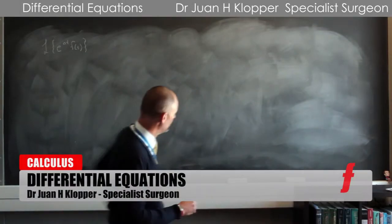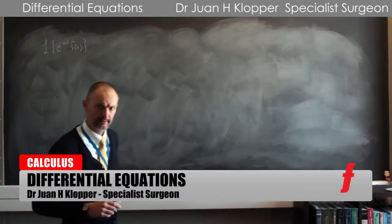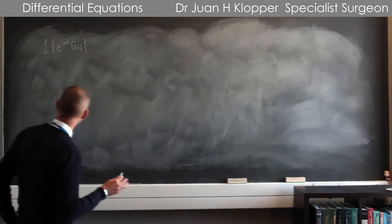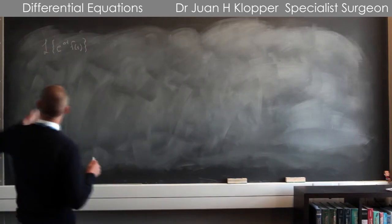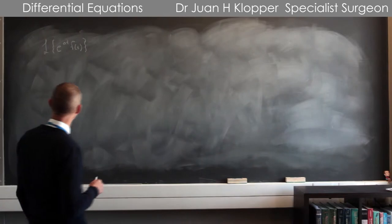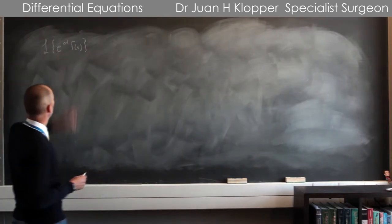I'm going to show you something quite neat. It's called operational properties. So I might know the Laplace transform of f(t), but what if I multiply that f(t) by e to the power at?